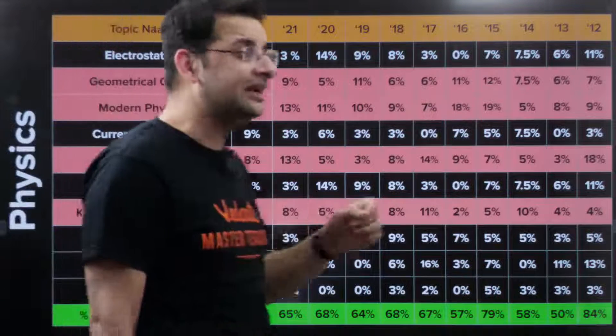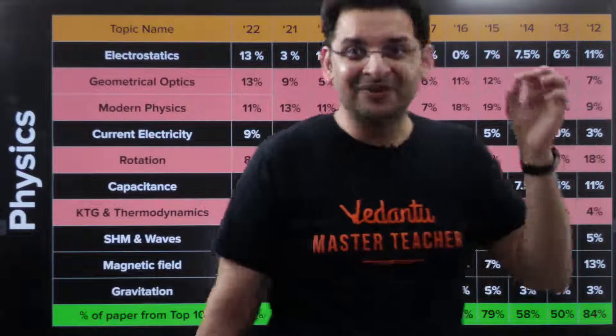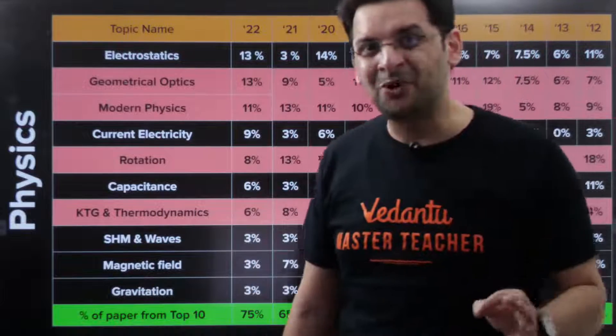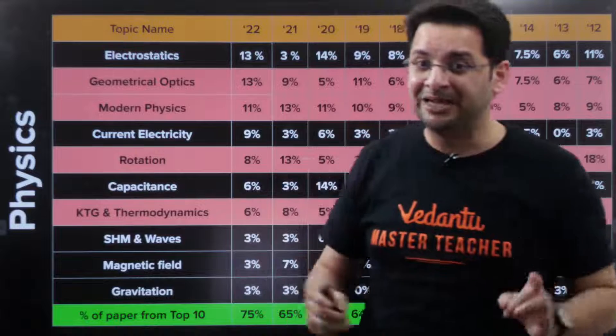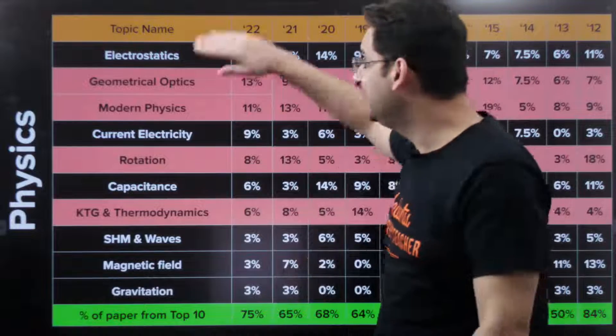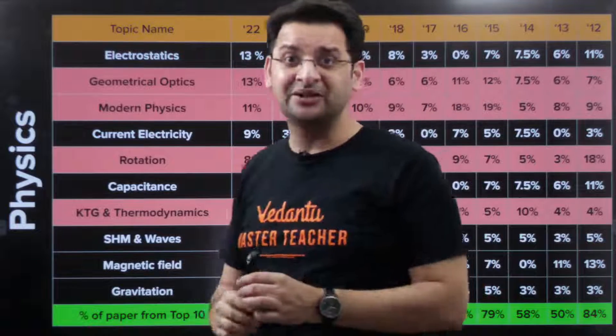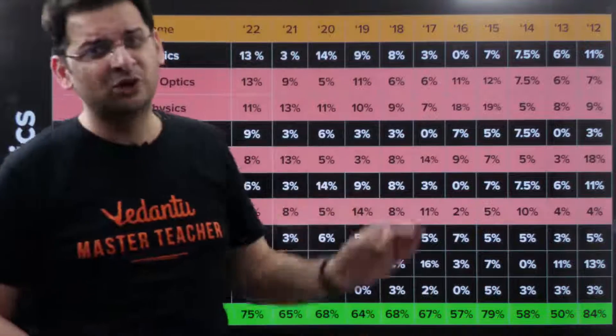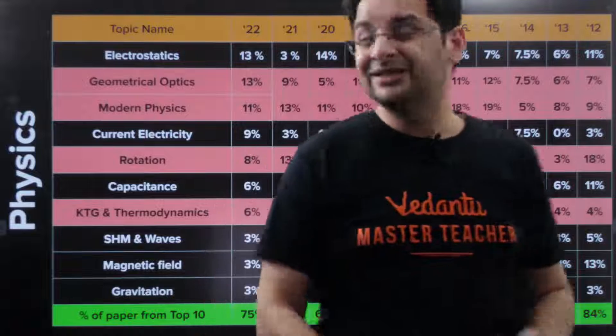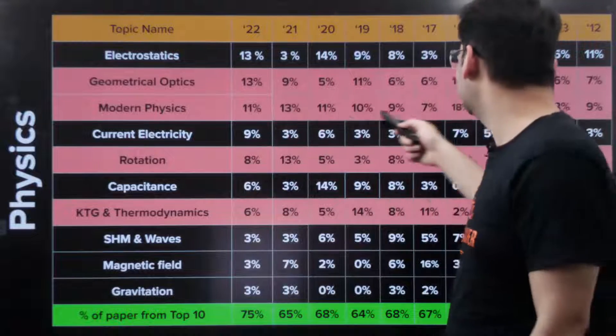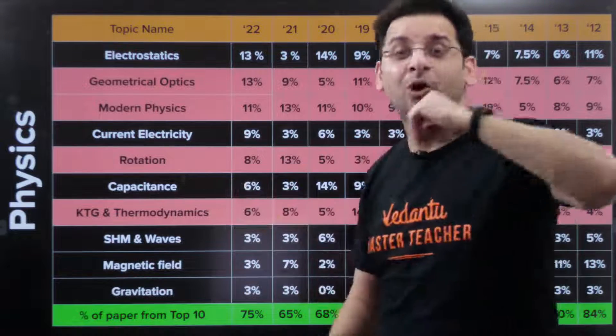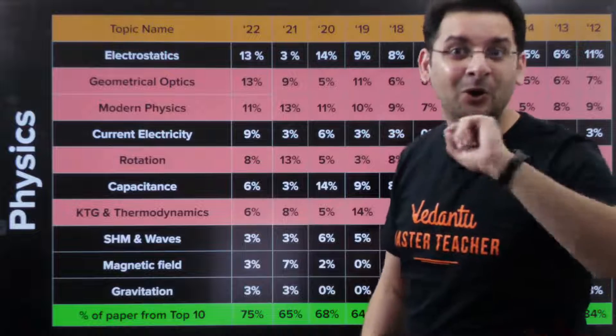Optics is again one thing which we tend to generally ignore, which is not to be ignored. Very important. It's a whole unit, it's a complete unit. And this is something that you need to do in a very, very good manner. So modern physics is also something which has very high weightage and is generally ignored by a lot of students.